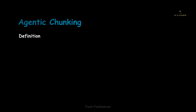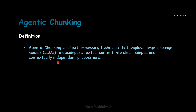First we'll see the official definition of agentic chunking. By the definition, agentic chunking is a text processing technique that employs large language models, that is nothing but LLMs, to decompose the textual content into clear, simple and contextually independent propositions. It is a text processing technique which basically makes the context more meaningful, so that we can use those created propositions as chunks, or we can then perform any other type of chunking on it to create chunks.